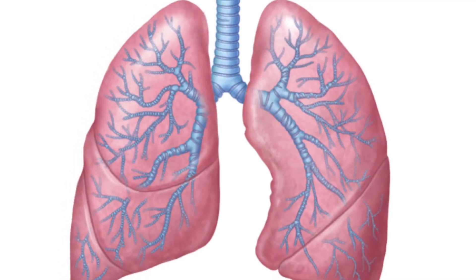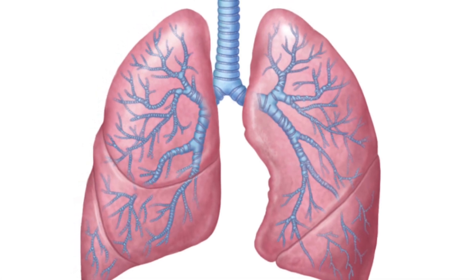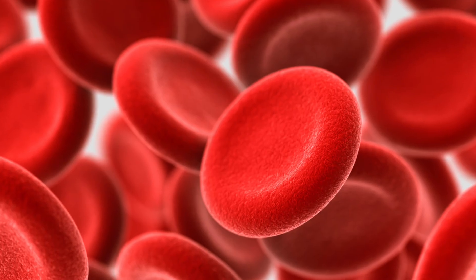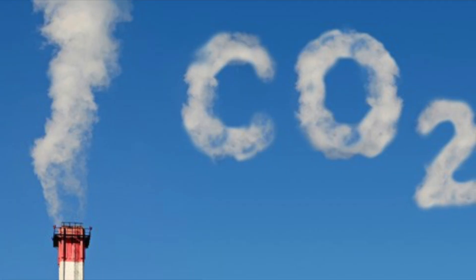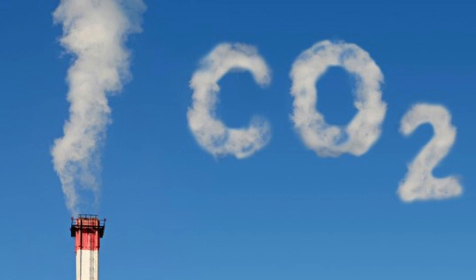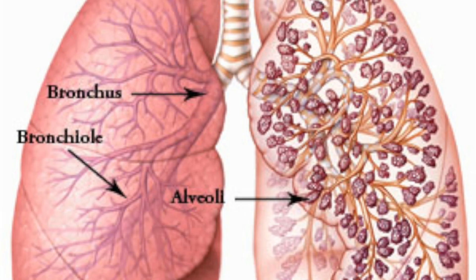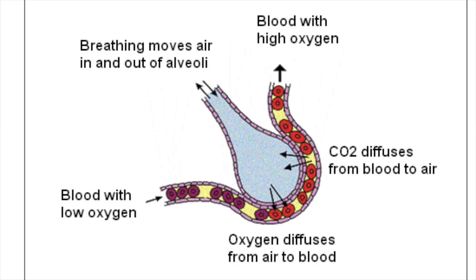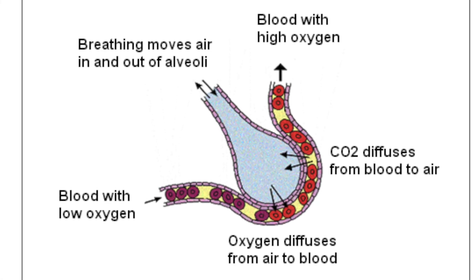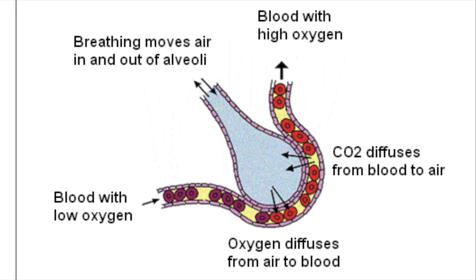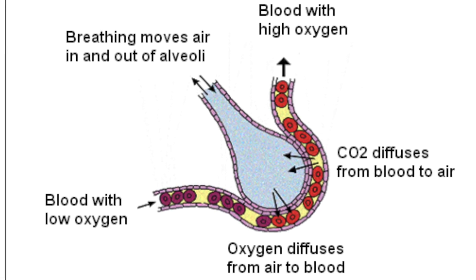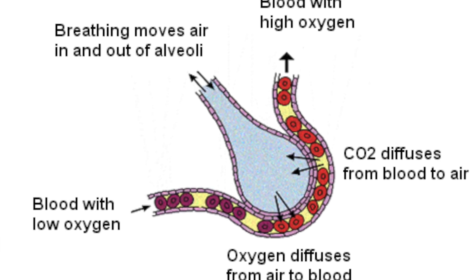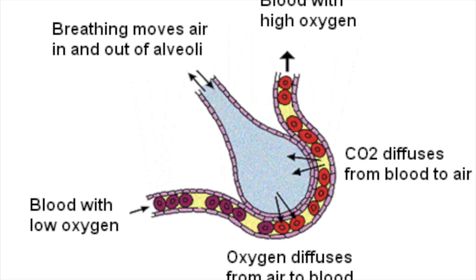The lungs are specially adapted to make gas exchange more efficient, and the function of the lungs is to transfer oxygen to the blood and remove waste carbon dioxide. In order to do this, they contain millions of air sacs called alveoli. Alveoli have an enormous surface area of around 75 meters squared in humans, and they also have a moist lining which is perfect for dissolving gases, and thin walls.